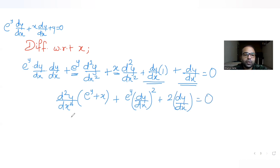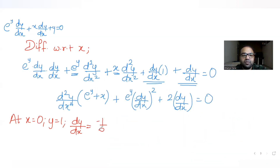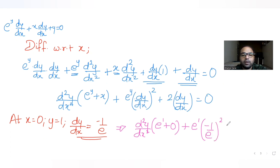To find d²y/dx² at x = 0: we know x = 0, y = 1, and dy/dx = −1/e. Substituting: (e^1 + 0)·(d²y/dx²) + e^1·(−1/e)² + 2·(−1/e) = 0, which gives e·(d²y/dx²) + e·(1/e²) − 2/e = 0.